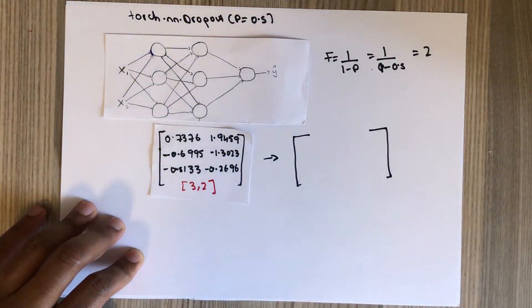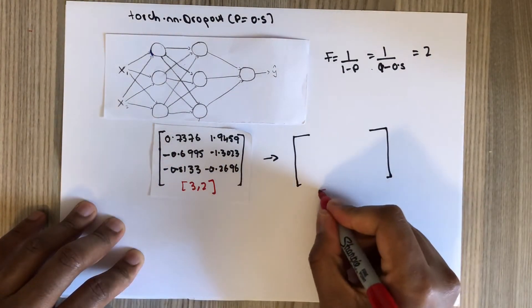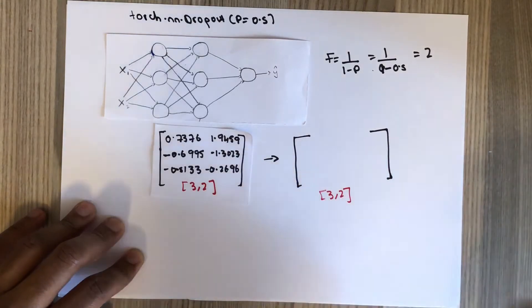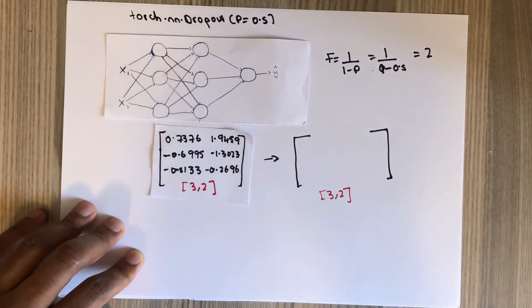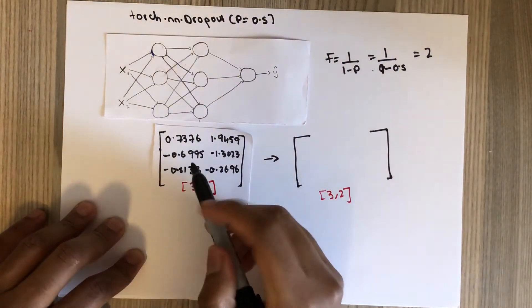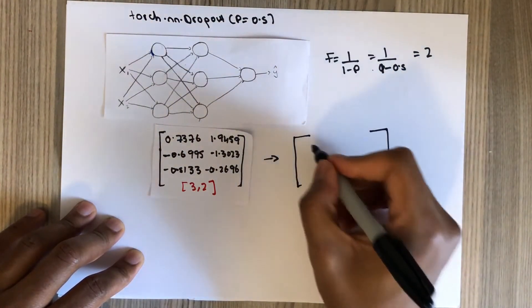And again, the dimension will be the same, 3 by 2. And let's say this has been selected, the first one has been selected to be non-zero. We are not just going to copy the value but multiply by the scale factor, so it's going to become 1.4753.